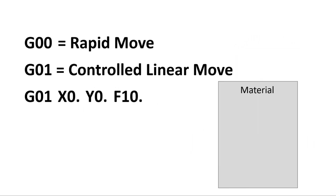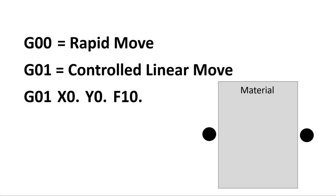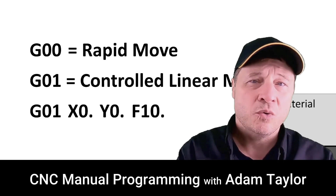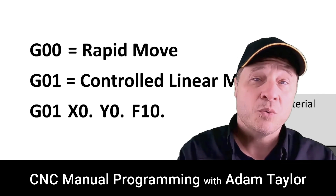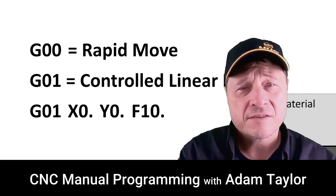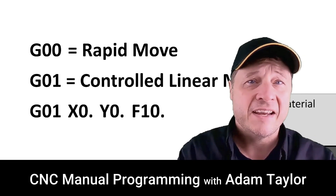Look at this example. If we wanted to move the tool from this position to this position using G01, then the cut would look like this. G01 allows us to move a tool at a controlled rate from one location to another, whether it's above the part or while the tool is engaged in the part.